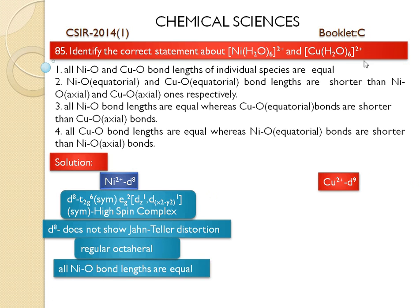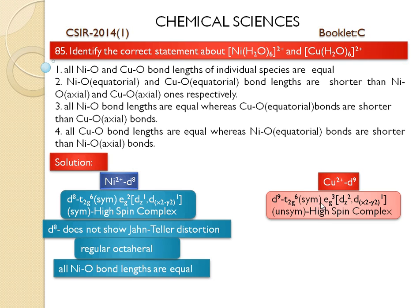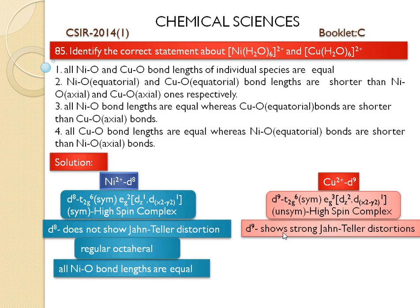In hexaaqua copper(2+) complexes, the copper(2+) ion exists as a d9 configuration. In the presence of aqua ligands, the d orbitals are split into T2G6 and EG3. The T2G orbitals are symmetrically filled, but the EG orbital is unsymmetrically filled, so it will have strong Jahn-Teller distortion. According to Jahn-Teller distortion, the half-filled orbitals of dx²−y² will experience lesser shielding effect, so the ligands on the xy plane will experience a greater effective nuclear charge and be drawn closer to the copper(2+) nucleus. Therefore, the ligands on the xy plane will have shorter bond lengths than those on the z-axis, and the structure will be distorted — the distortion will be tetragonal.